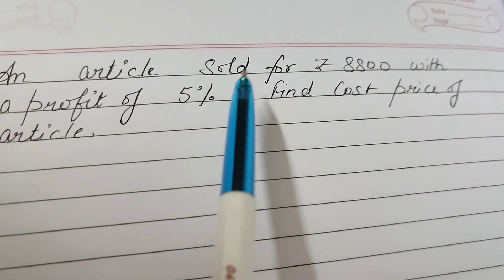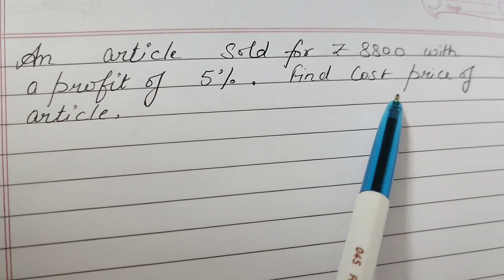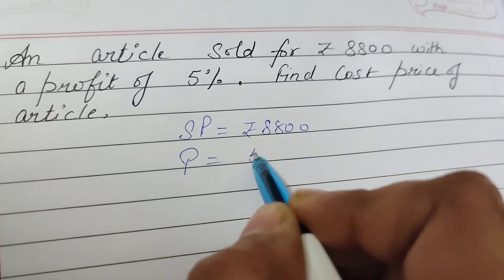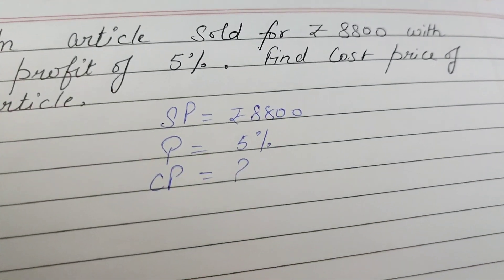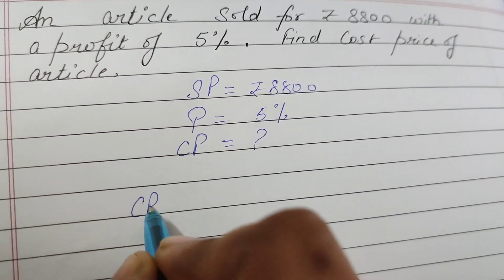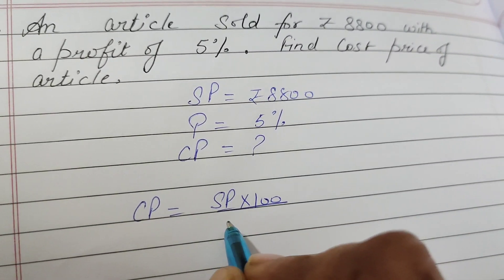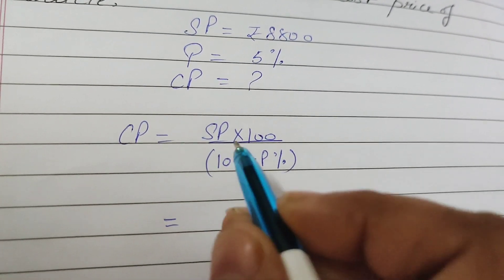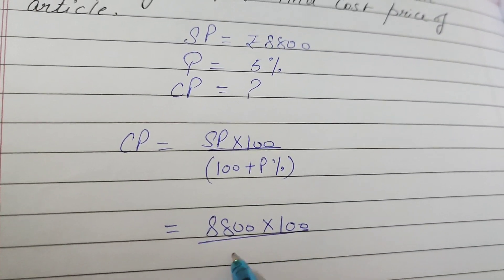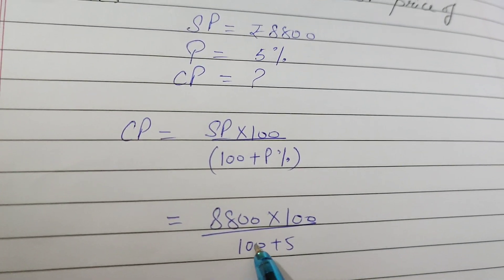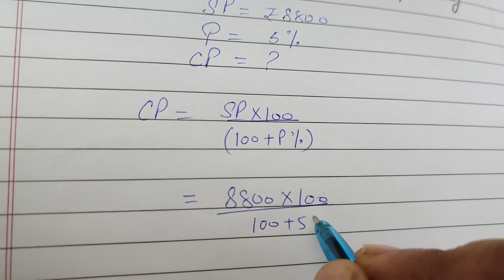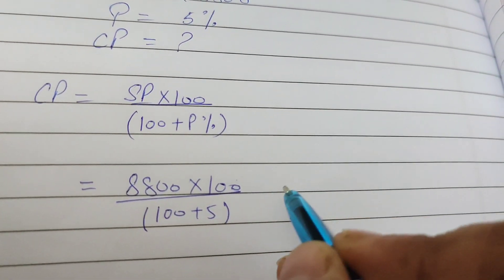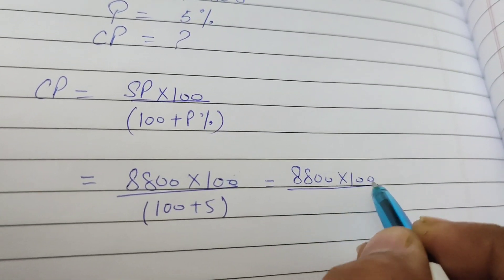Next is an article sold for rupees 8800 with a profit of 5 percent. Find the cost price of the article. Given is selling price, that is rupees 8800, profit is given, that is 5 percent. We need to find out the cost price. For this we can directly apply the formula: CP equals SP multiply by 100 divided by 100 plus P percent. Put it in the bracket. Whenever we are putting the values, yahan pe 100 plus 5. That is wrong, completely wrong. Isse bracket mein rakhiye. Yeh multiply mein hai lekin yeh add ho raha hai, so yeh nahi kaatna hai. Isse solve karenge, 100 divided by 105.